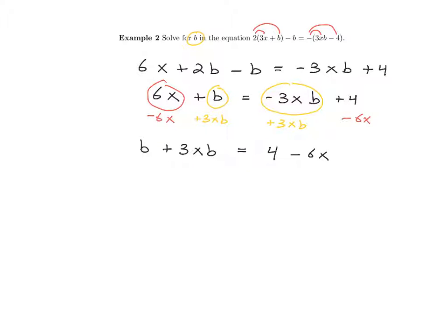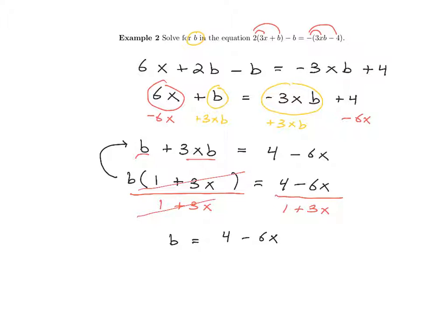So here we go. All of the terms with b are on the same side of the equation. Here's why this helps us. I can factor a b out from this term and this term. I'll write that as b in parentheses. What is left over after you factor out this b is going to be a 1 and a 3x. As a final step to this problem, I can now divide both sides by 1 plus 3x. It'll completely cancel those two parts, and what is left over is b. And on the right side, we have 4 minus 6x divided by 1 plus 3x. And this would be the final answer.